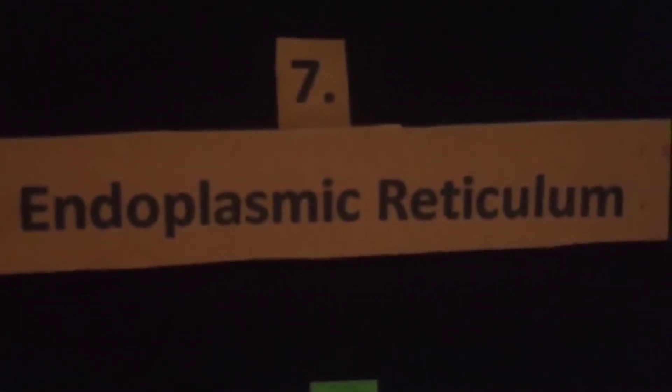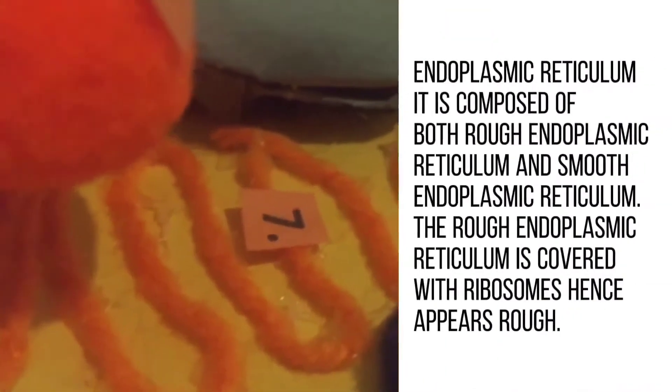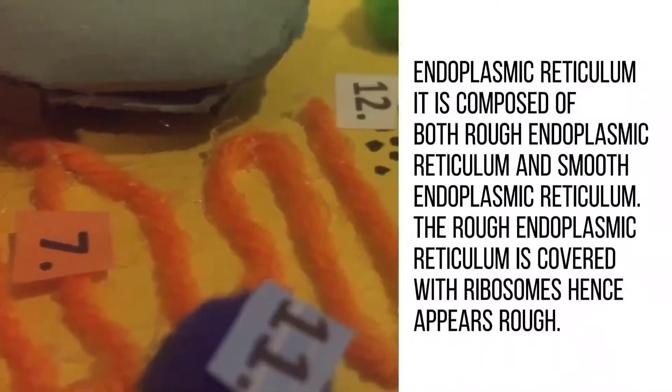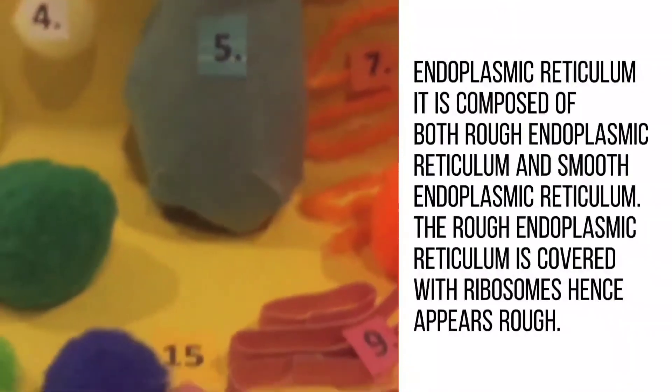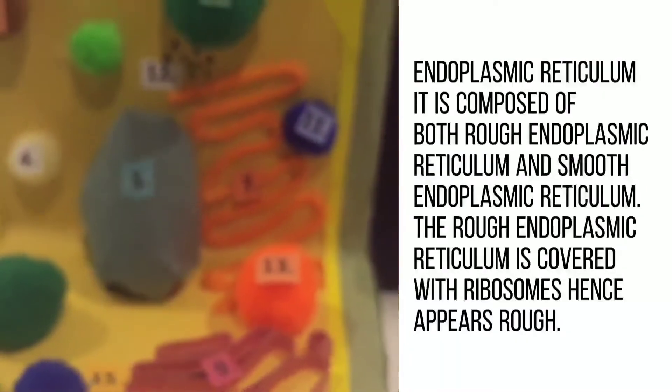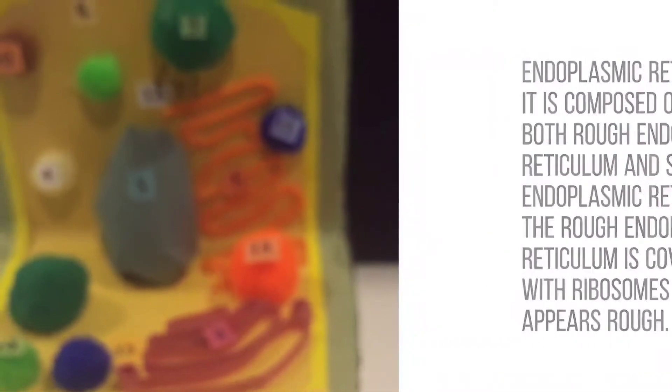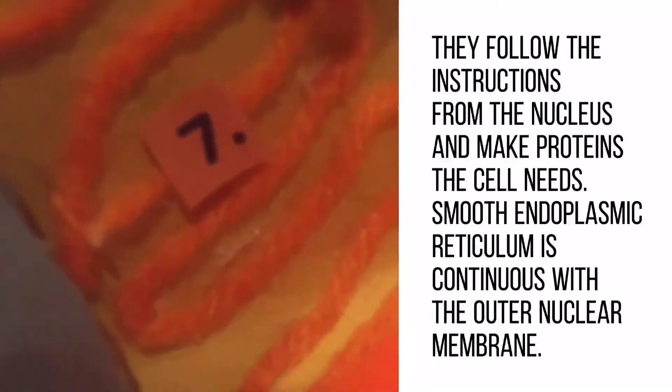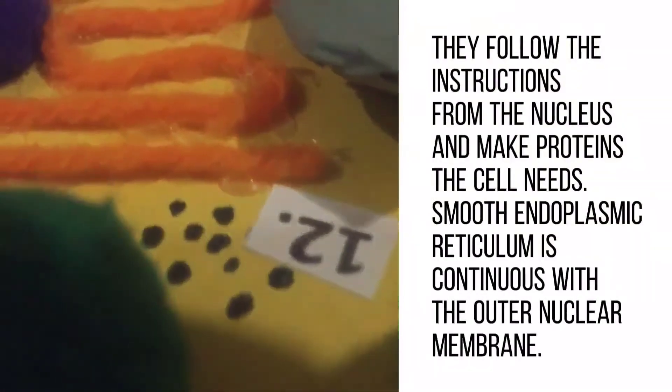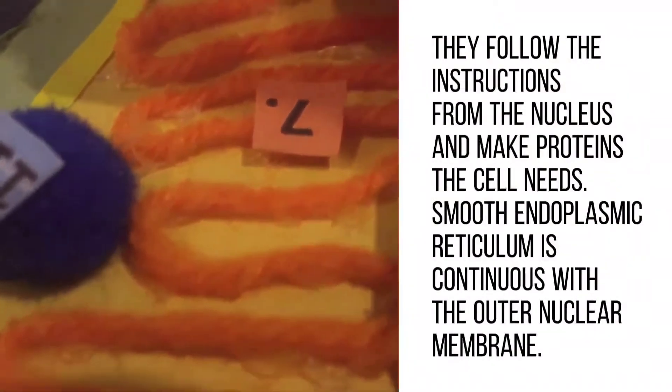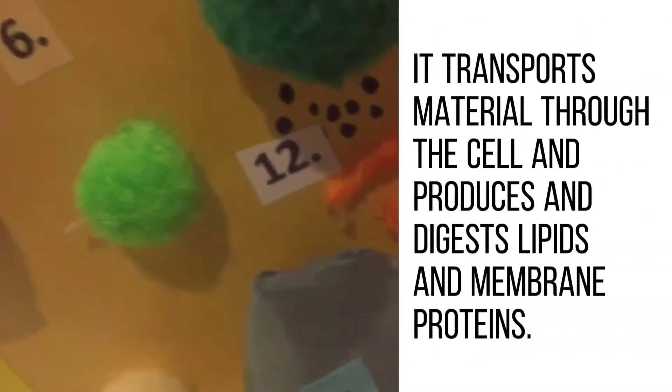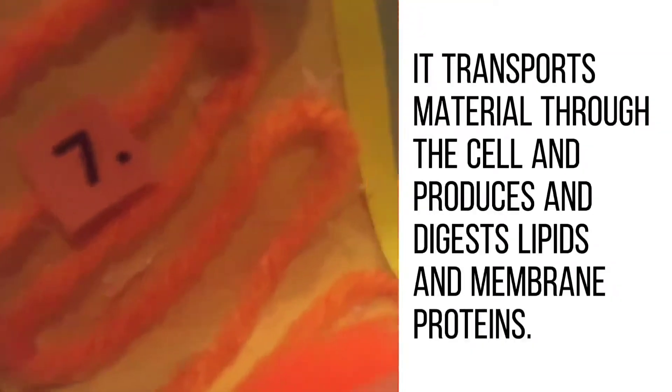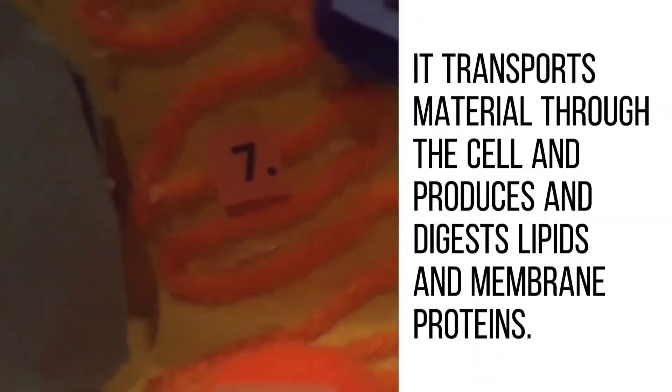Endoplasmic reticulum is composed of both rough endoplasmic reticulum and smooth endoplasmic reticulum. The rough endoplasmic reticulum is covered with ribosomes, hence appears rough. They follow the instruction from the nucleus and make proteins the cell needs. The smooth endoplasmic reticulum is continuous through the outer nuclear membrane. It transports material through the cell and produces and digests lipids and membrane proteins.